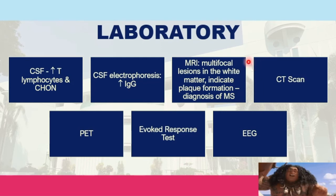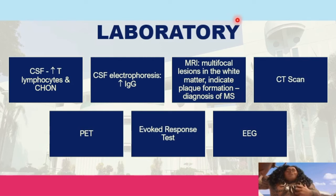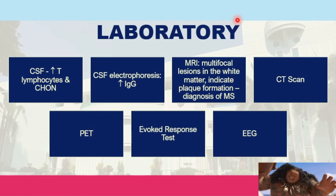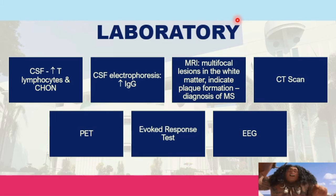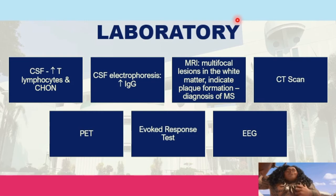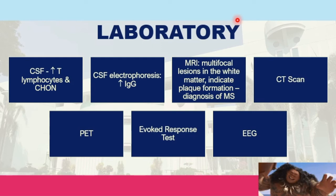The evoked potential test measures the time it takes for the nerve to respond to stimulation, such as the healthcare provider awakening the patient or using a bell to evoke a response. This is usually investigated further in multiple sclerosis. EEG is also used to rule out other problems.